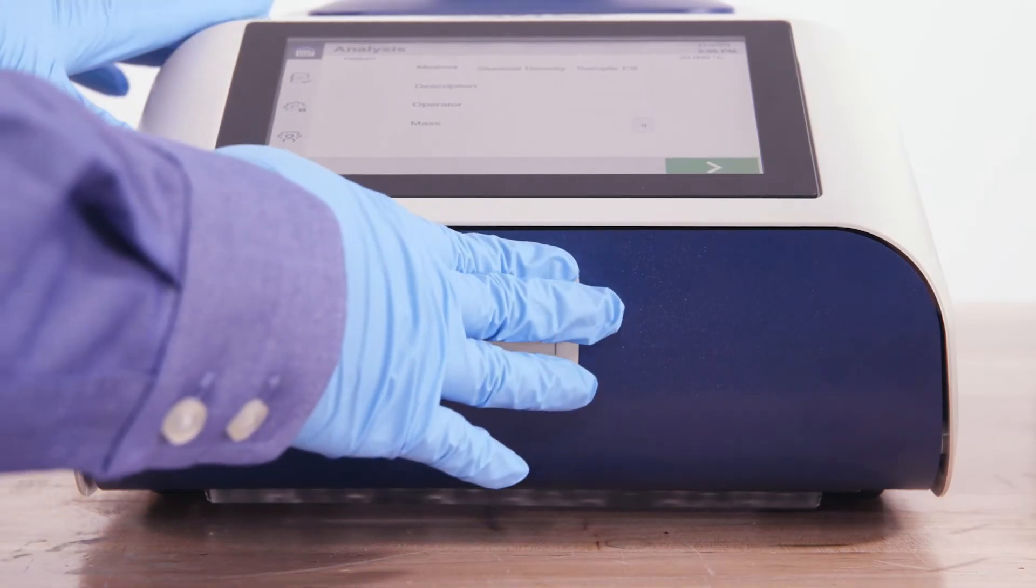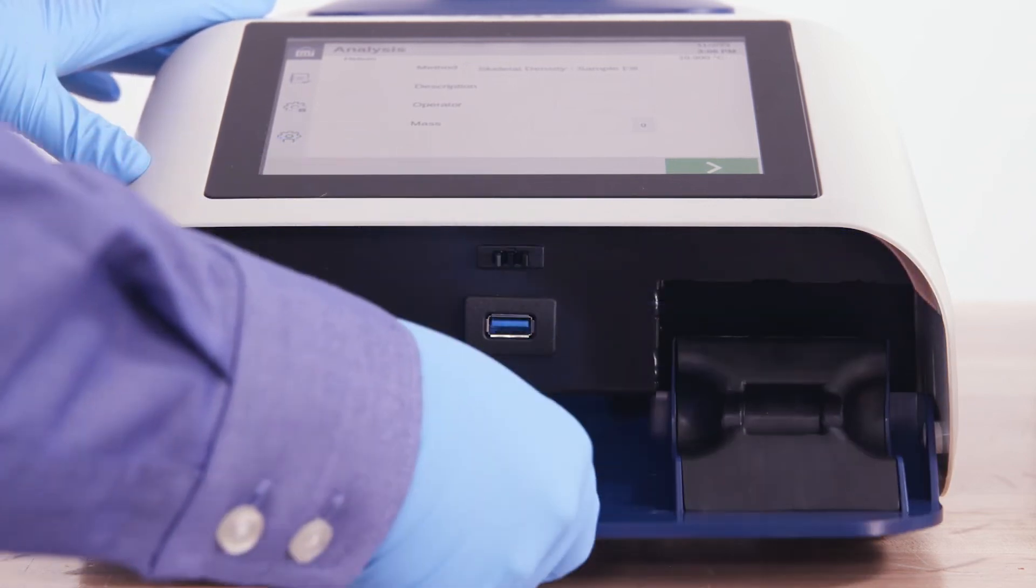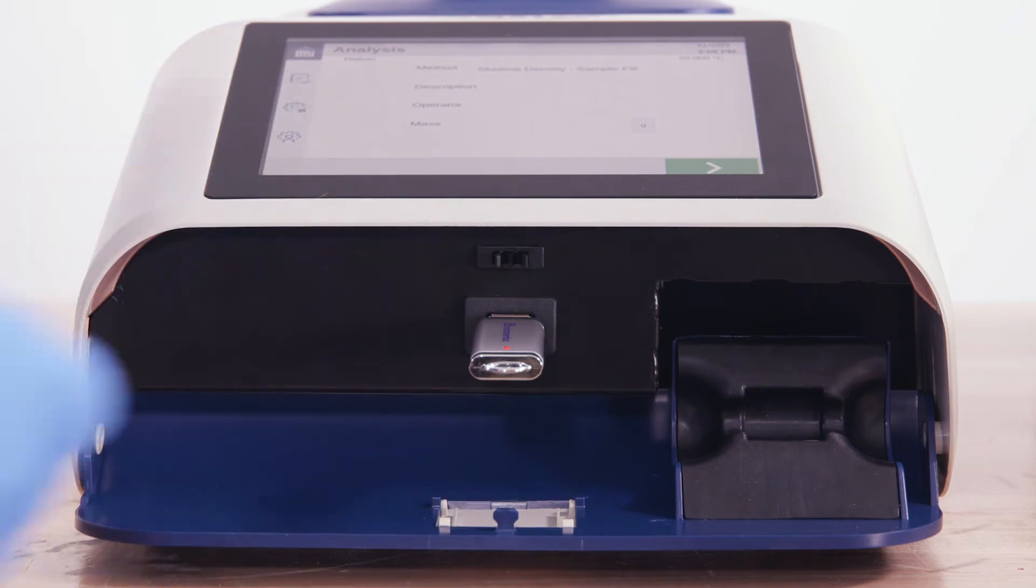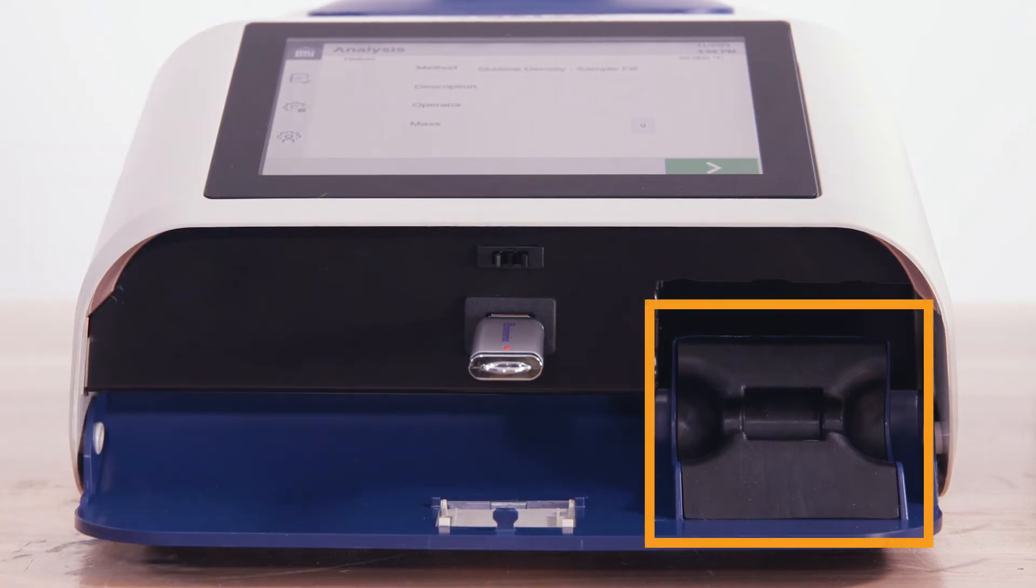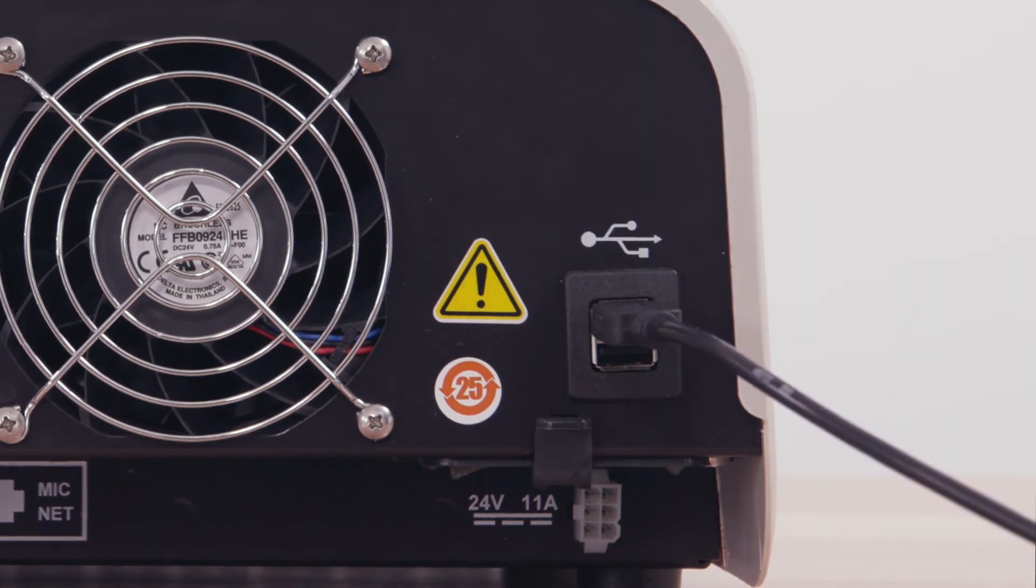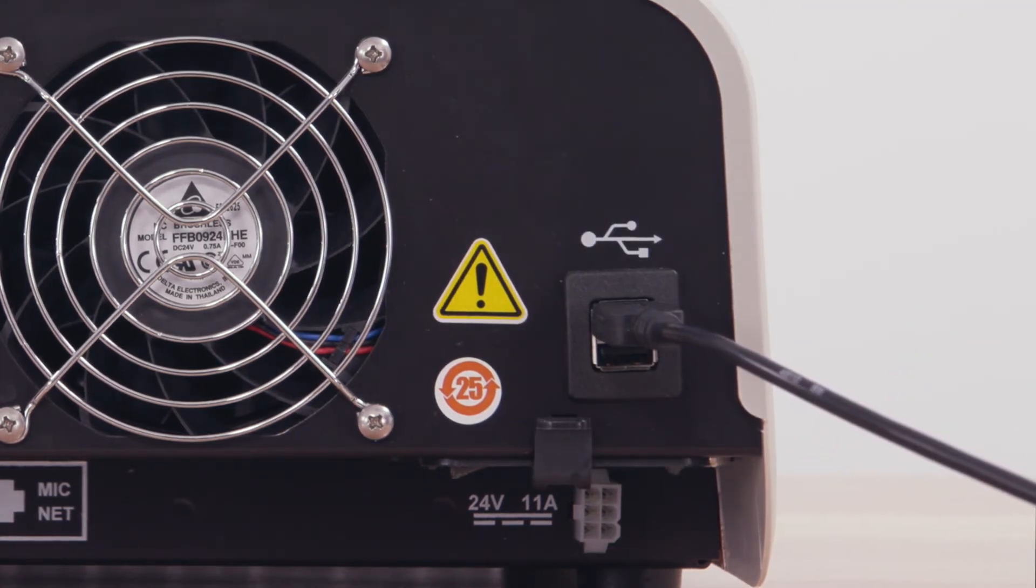The AccuPIC has a USB port for a USB stick to export data, as well as a calibration sphere storage. There are more USB ports in the back to be connected to a balance, keyboard and mouse.